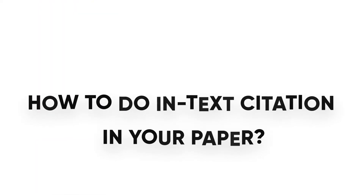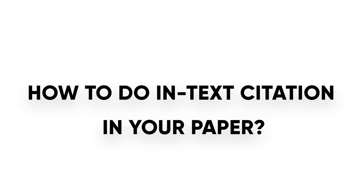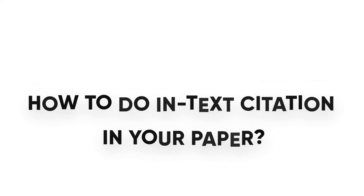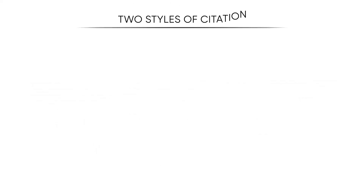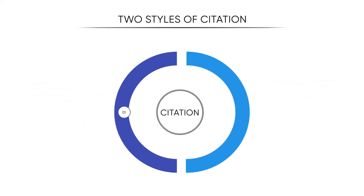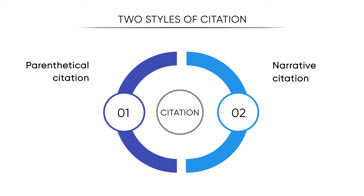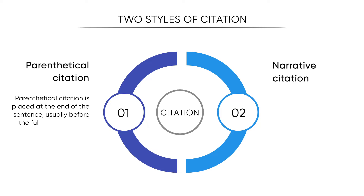So, how can you do in-text citation in your paper? You can actually do it in two ways: one is parenthetical citation and the other one is narrative citation. Parenthetical citation is placed at the end of the sentence, usually before the full stop or comma.